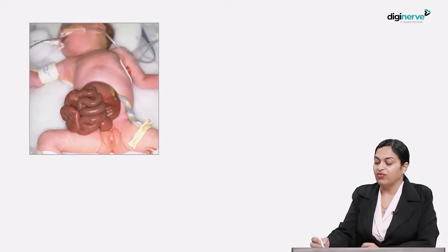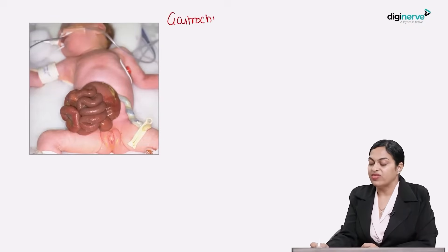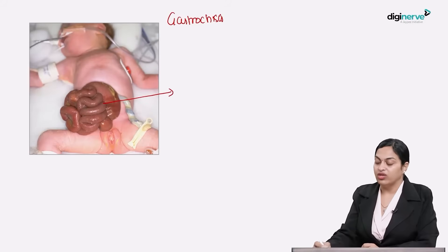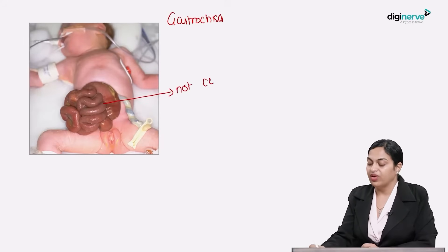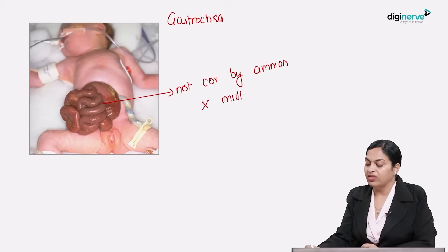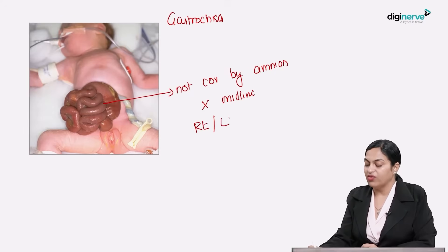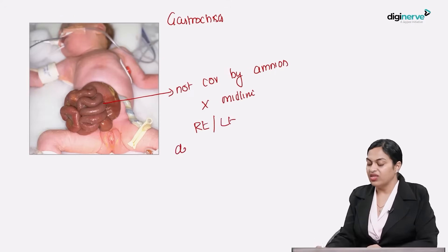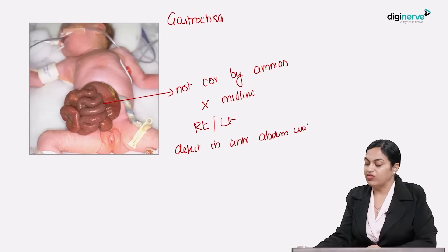Something very similar that can be confused with exomphalos is gastroschisis. Here again you see intestinal loops, but they are not covered by amnion, and the defect is not in the midline — it comes through either the right or left side through a defect in the anterior abdominal wall. In this session, we have discussed the key points related to each question. For further details, please refer to the quick revision and comprehensive series on the same topics. Hope it was useful — happy learning!